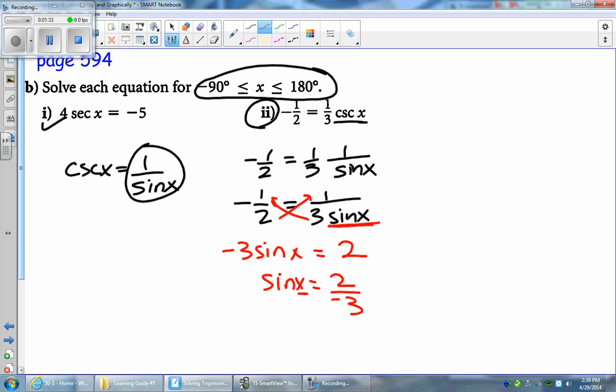So first thing I would do is actually find out where on our Cartesian plane will these x values lie. So my x value, sine x, is given by a negative value. So using add sugar to coffee, I should know that sine will be negative in two quadrants. It's going to be negative in quadrant 3 and quadrant 4.